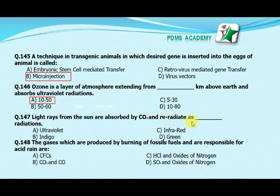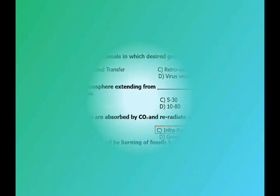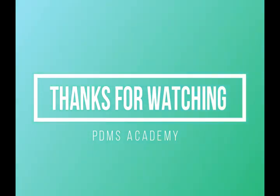Light rays from the sun are absorbed by carbon dioxide and re-radiated as which one of the following radiations? Option A: ultraviolet radiations. Option B: indigo radiations. Option C: infrared radiation. Option D: green radiation. Our correct answer is C, infrared radiation. Our next MCQ is: the gases produced by burning of fossil fuels and responsible for acid rain are — Option A: CFCs. Option B: carbon dioxide and carbon monoxide. Option C: HCl and oxides of nitrogen. Option D: sulfur dioxide and oxides of nitrogen. Our correct answer is D, sulfur dioxide and oxides of nitrogen.